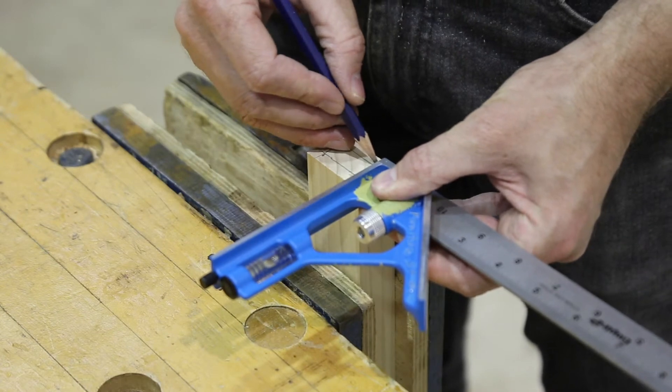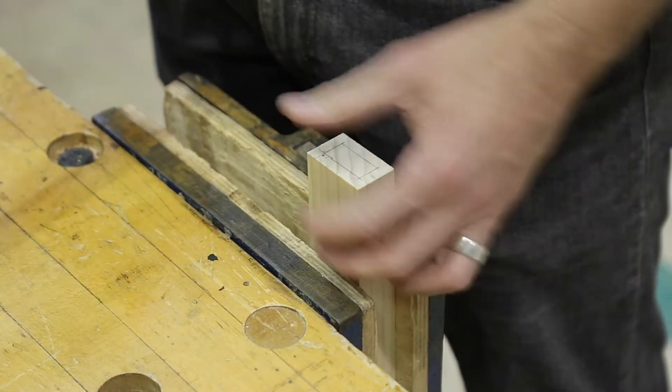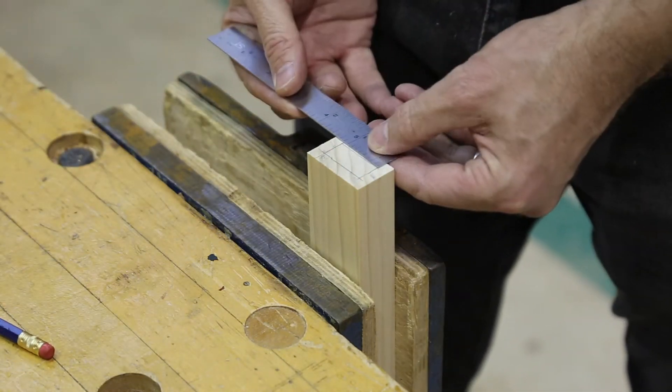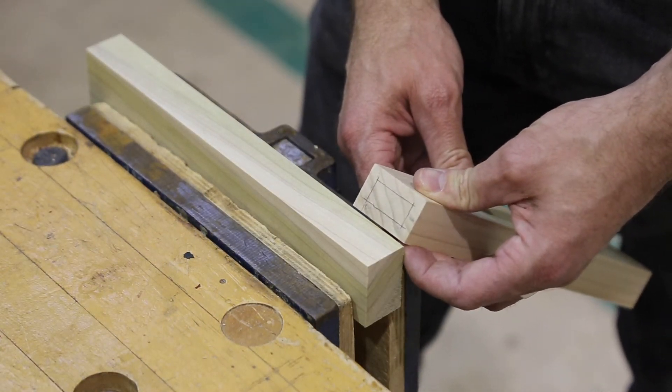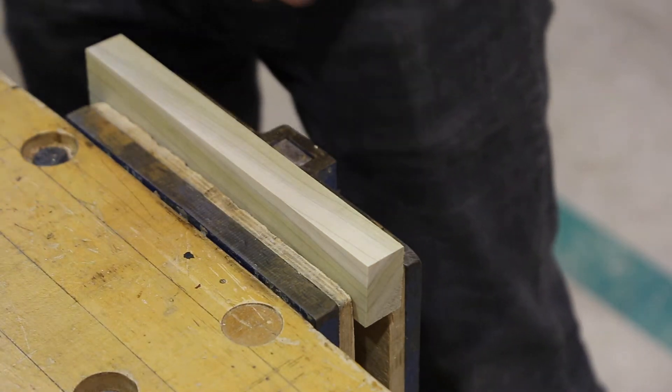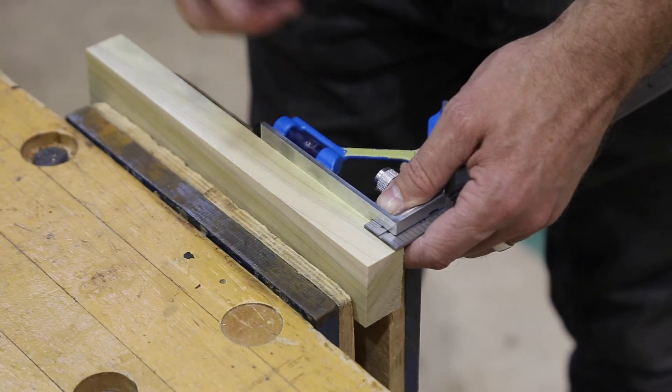For this first step, we want to have a rough idea of how big our tenon is going to be, but it's important to cut our mortise first and size our tenon to fit that mortise. It's definitely worth marking out both your tenon and your mortise piece at this early stage so that you can use the same setup on your combination square, especially if you're creating a flush joint as I'm doing here.